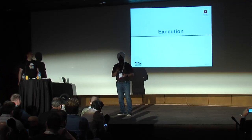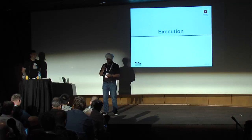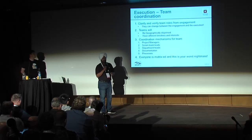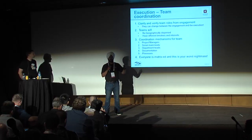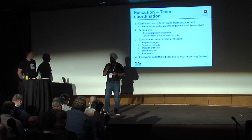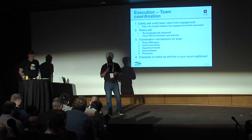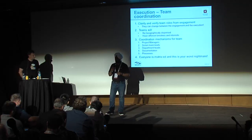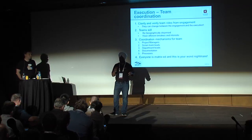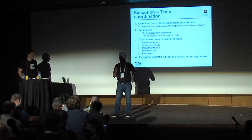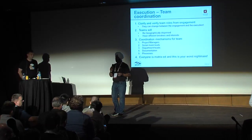Now we'll talk about execution — like being handed the baby and having to ship them off to college. You are now one team, whether you're the vendor or the customer who hired the vendor. The first thing is to clarify and verify the team roles that were identified. They may have changed, and there's always an informal organization chart alongside the formal one. Who's the go-to person for program management, testing, or architecture? It's not always the chief architect — you have to know those people.